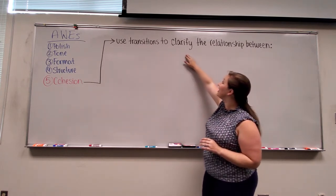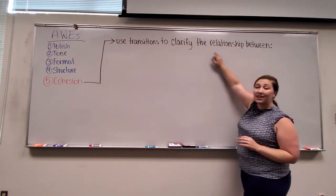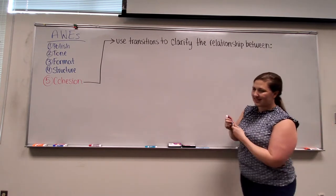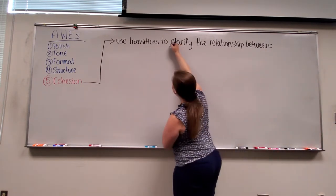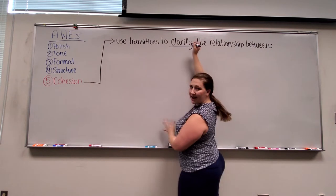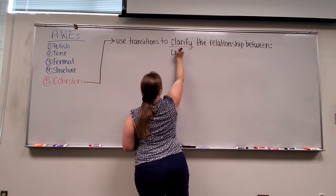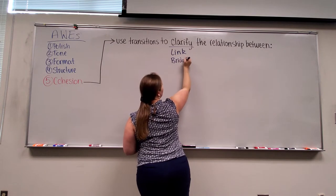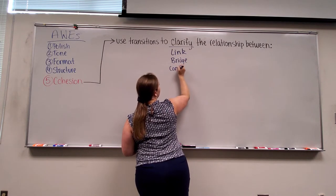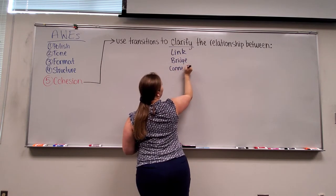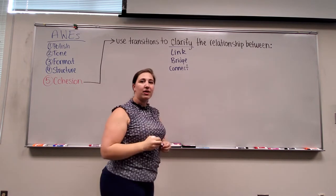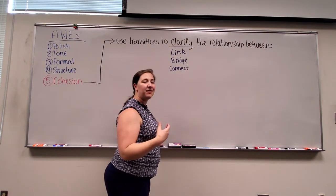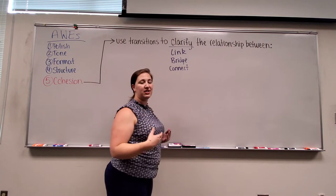Cohesion is the use of transitions to clarify the relationship between ideas. When I say clarify, all I mean is to link the ideas. Maybe you know transitions as a bridge — they are there to connect. So you are clarifying what you have written, making it easier for your audience to understand.